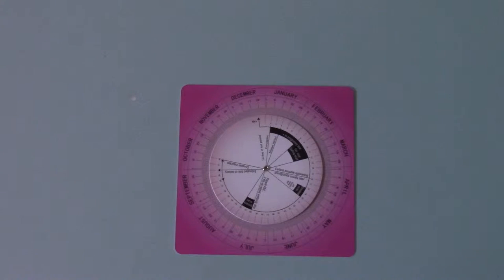through reading the display on this wheel, be able to show the conception date, the date when the first missed period would be expected, and then dates for the first trimester.